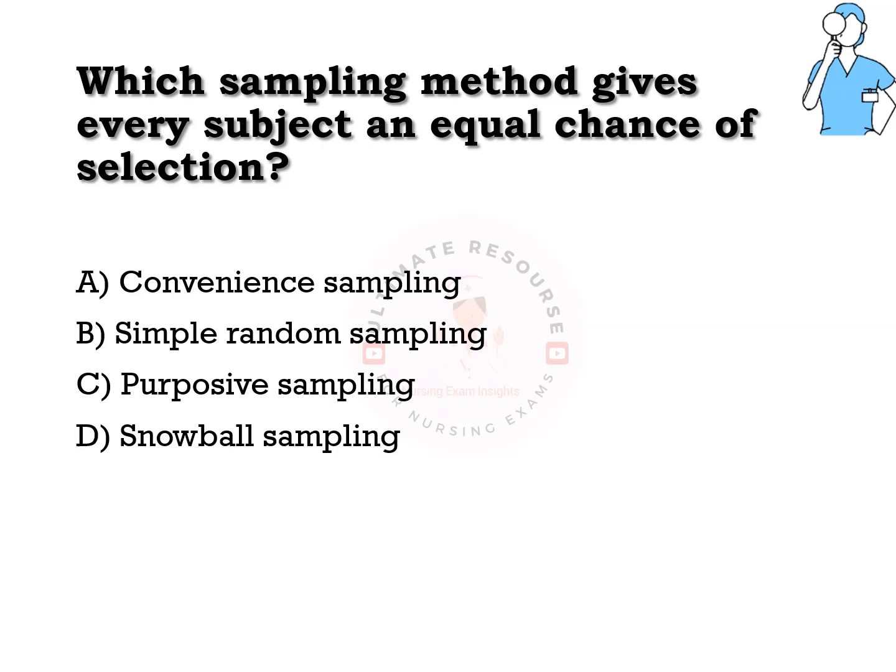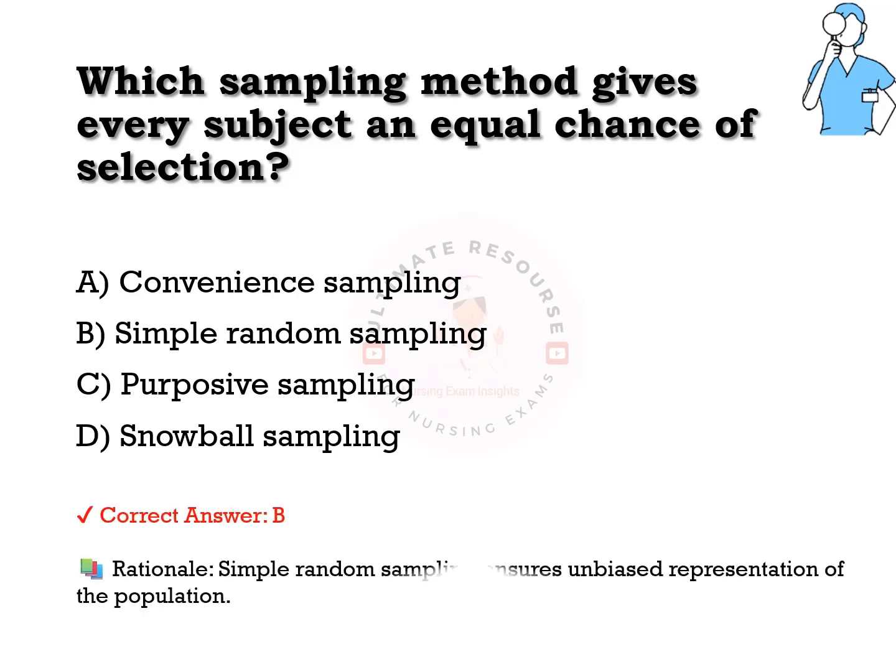Which sampling method gives every subject an equal chance of selection? Options are a) convenient sampling, b) simple random sampling, c) purposive sampling, d) snowball sampling. The answer is b) simple random sampling. This type of sampling ensures unbiased representation of the population.